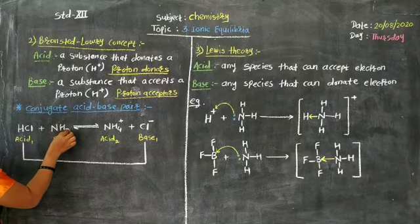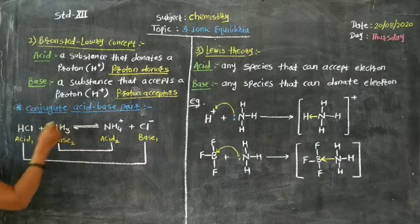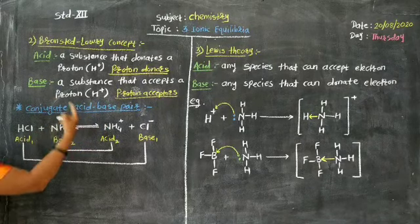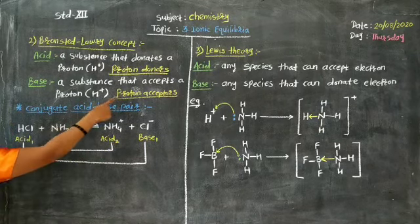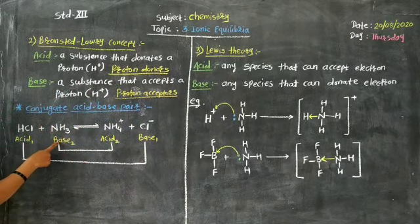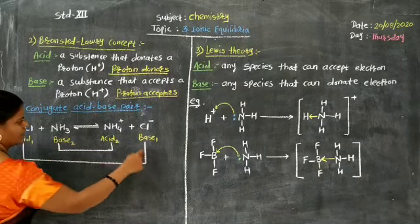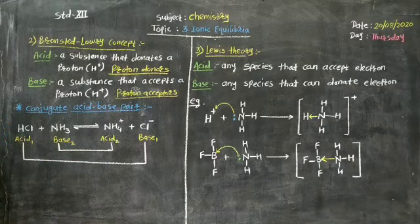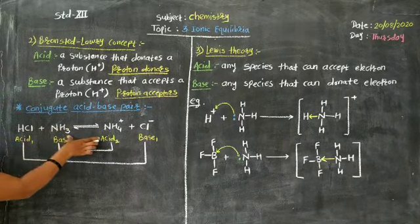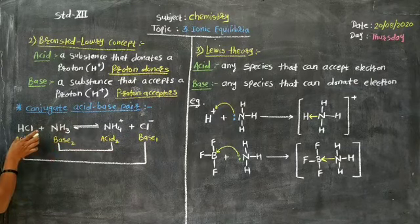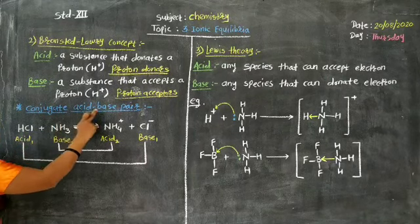Secondly, ammonia NH3 changes to NH4+. On the reactant side, ammonia accepts one proton and gets converted to NH4+ on the product side. Since proton acceptors are bases, ammonia is a base. HCl and Cl− differ only by a single proton, and similarly NH3 and NH4+ differ only by a single proton. Such a pair of acid and base which differs by a single proton is known as a conjugate acid-base pair.